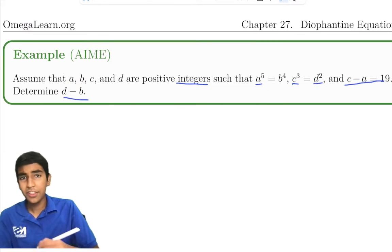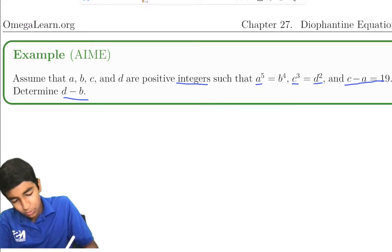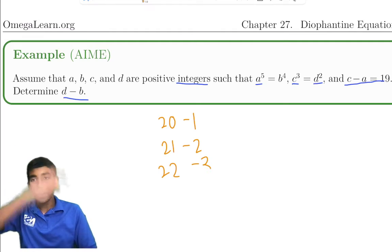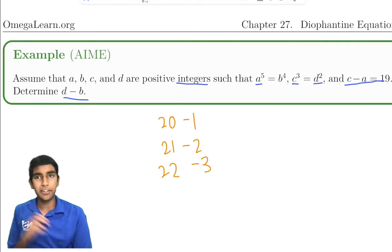c and a, well even for integers there's so many possibilities. We could have 20 - 1, 21 - 2, 22 - 3, and so on. There's too many possibilities. There's an infinite number of possibilities. Way too many for us to count.